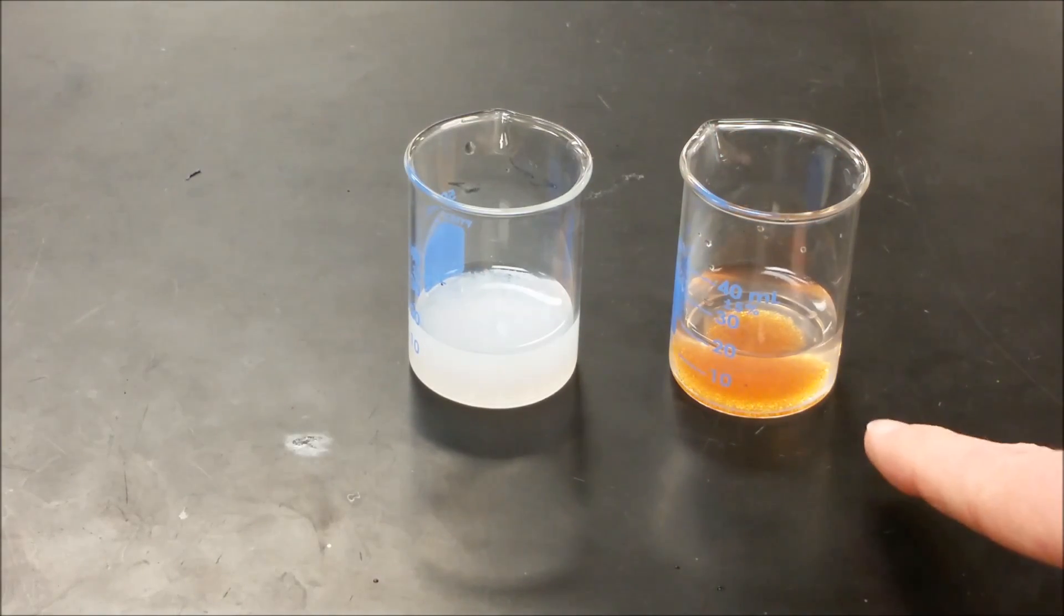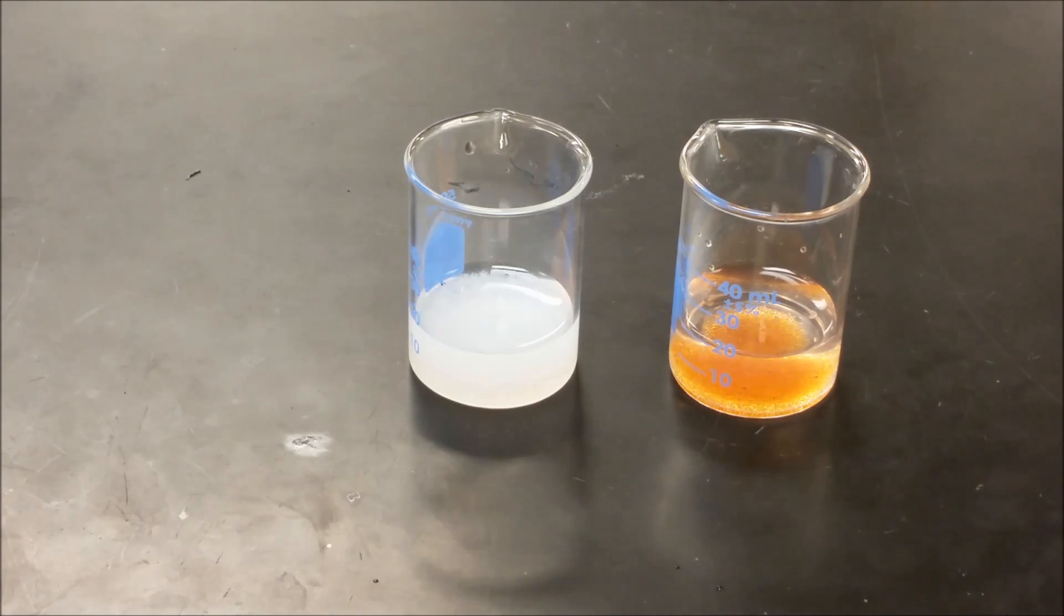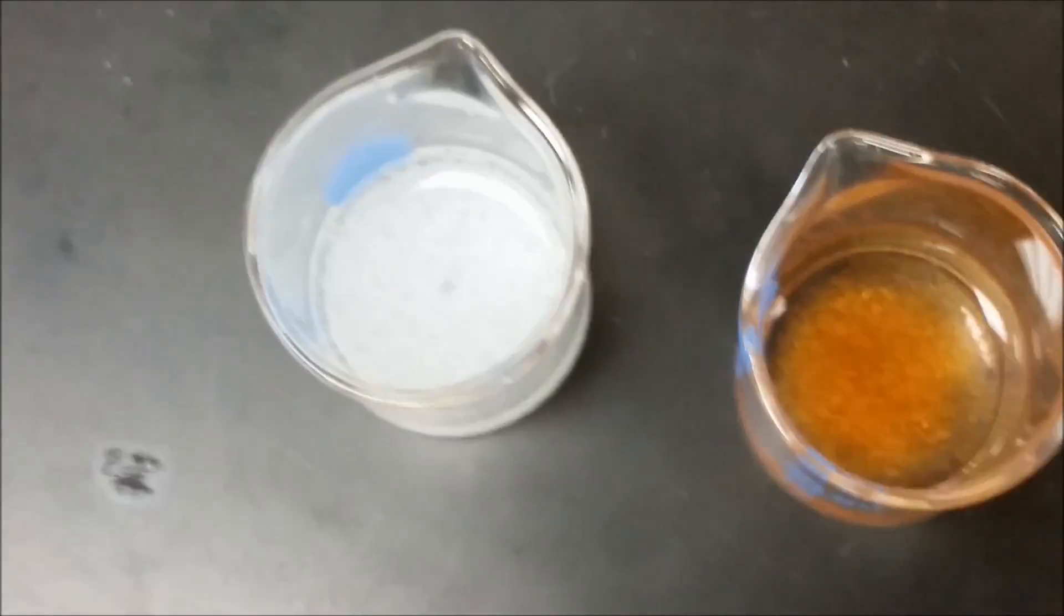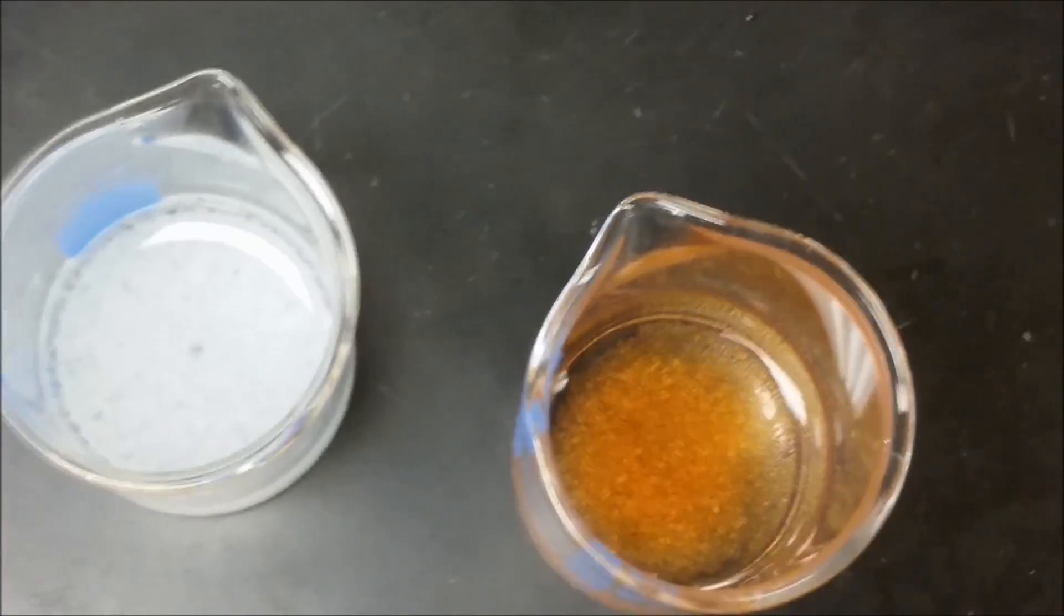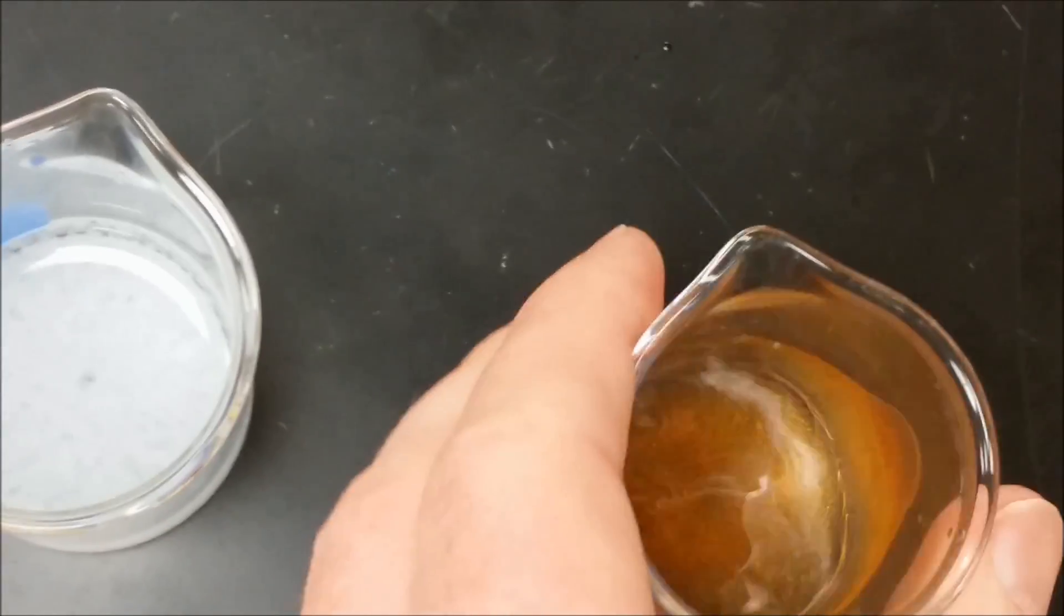Now we're back to clear over here. So here we can see that we have our calcium carbonate precipitate, and then here we have the see-through mixture.